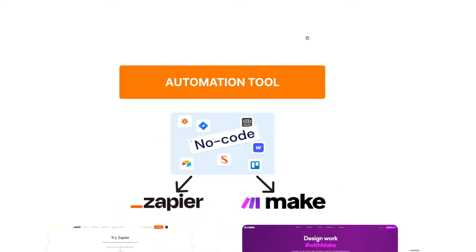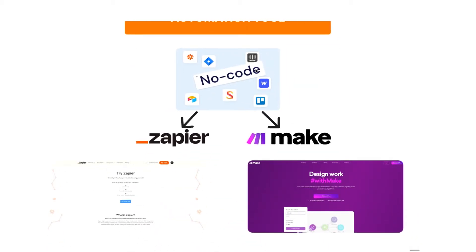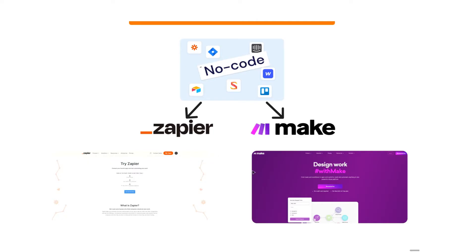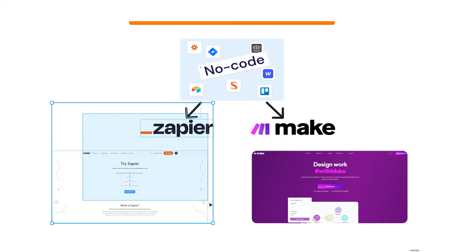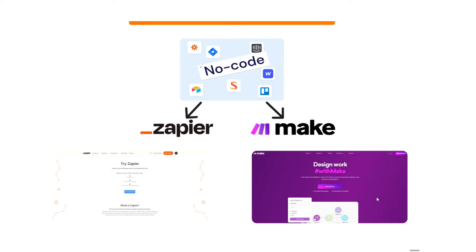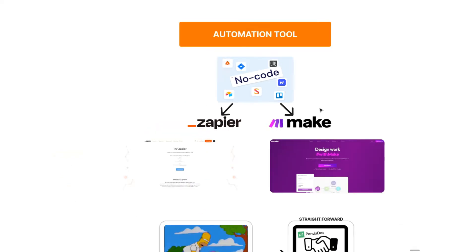When it comes to automation tools, it doesn't really matter what you're using — it's a no-code tool connecting different APIs from different software. You can use Zapier or Make. We usually use Zapier for most of our videos because it's a bit more beginner-friendly, but we've recently started experimenting with Make. You can use either — Zapier is more beginner-friendly, but you can do a bit more with Make.